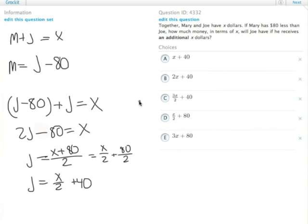Luckily that doesn't appear in the answer choices because we're actually asked what happens when Joe gets an additional X dollars. So we have X over 2 plus 40 plus an additional X dollars. That would be the same thing as 2X over 2, so then we have 3X over 2 plus 40, answer choice C.